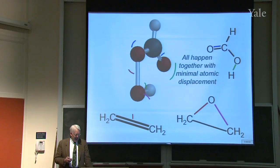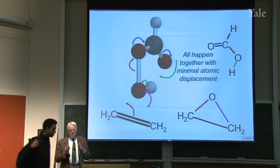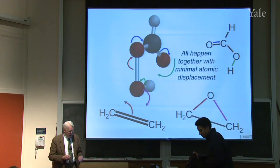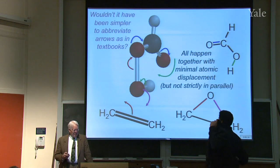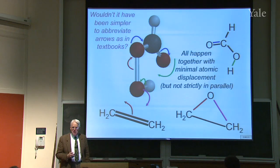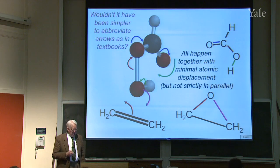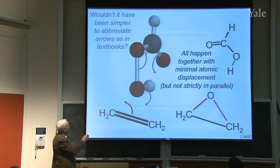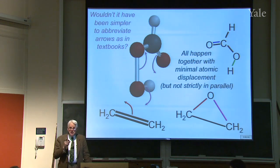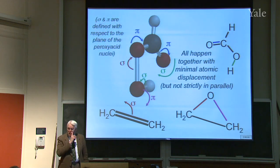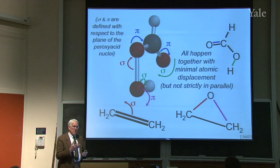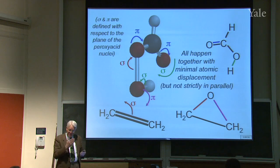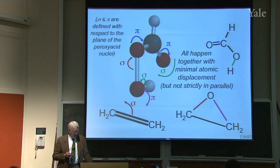This is where we were last time. There were a whole bunch of arrows we drew happening all at the same time, although not in perfect synchrony. After class, I was asked whether it would have been simpler to abbreviate arrows as in textbooks. The reason I drew so many arrows is that some electrons are pi and some are sigma — it can't be the same electron pair that's both sigma in the plane of the ring and pi out of the plane.